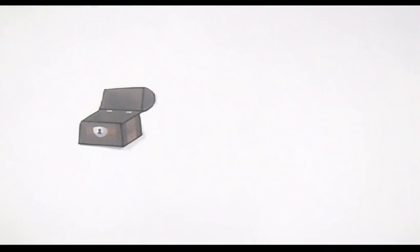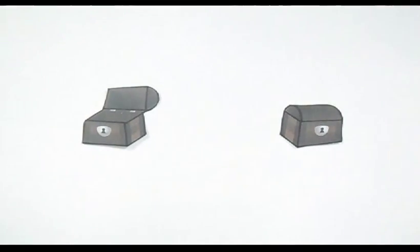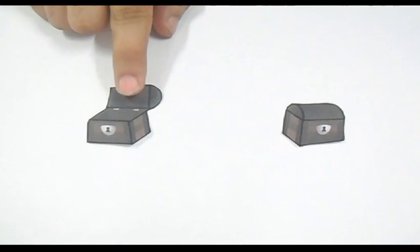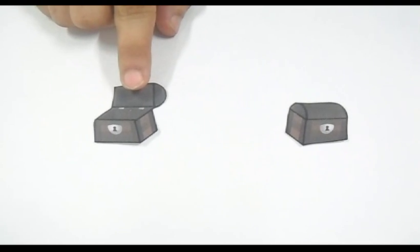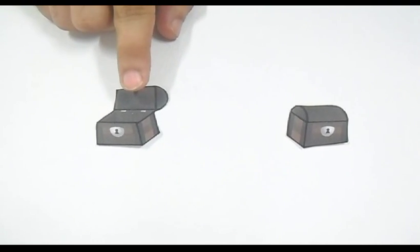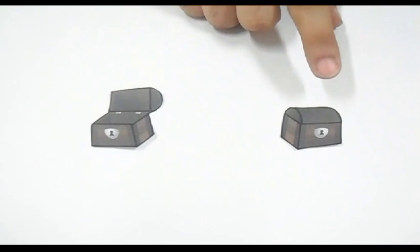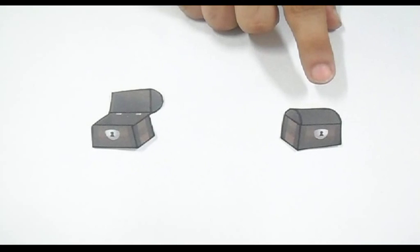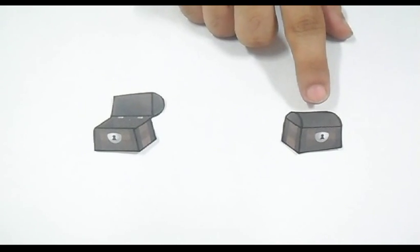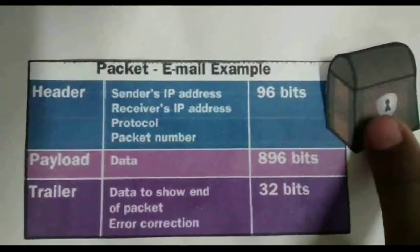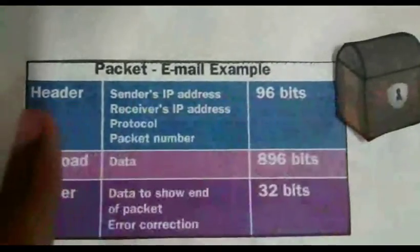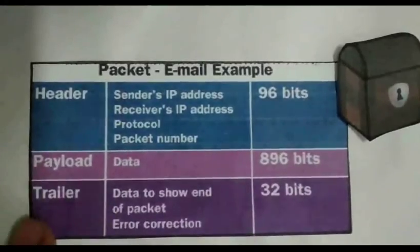A packet is a basic unit of communication over a digital network. We have two types of packets: first, an empty packet, and second, a filled packet. An empty packet is a data packet which is empty and requires data so that it could be transmitted over the internet. A packet which is ready to transfer or receive data over the internet is called a filled packet.